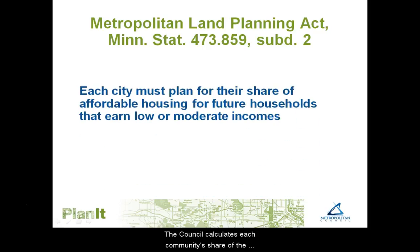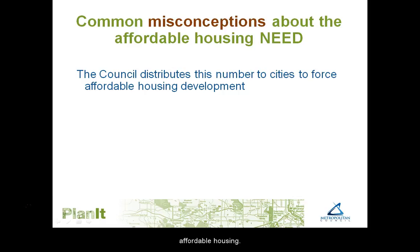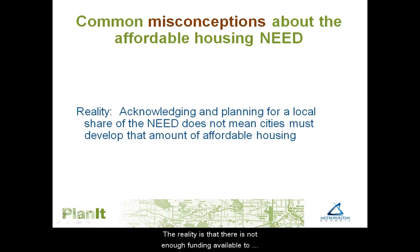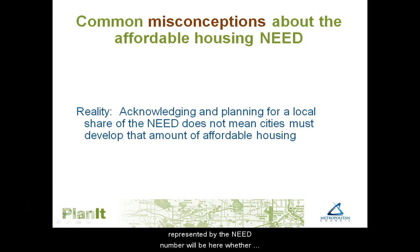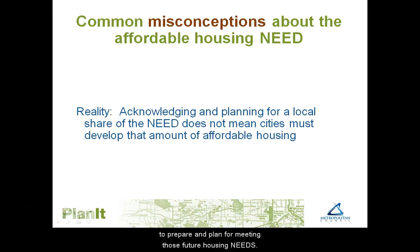The Council calculates each community's share of that need every 10 years in preparation for their comprehensive plan update. One misconception is that the Council distributes this number to force cities to develop affordable housing. The reality is that there is not enough funding available to meet the region's need, but the additional families and households represented by the need number will be here whether we plan for them or not. The Council distributes local need numbers to acknowledge these families and allow cities to think about the tools they have available to prepare and plan for meeting those future housing needs.